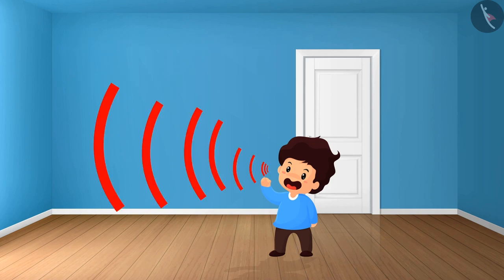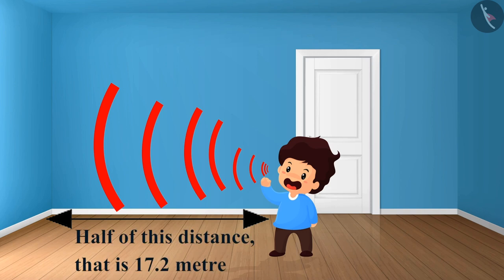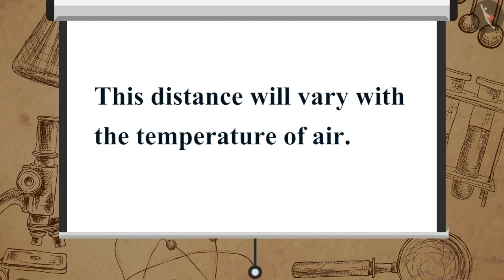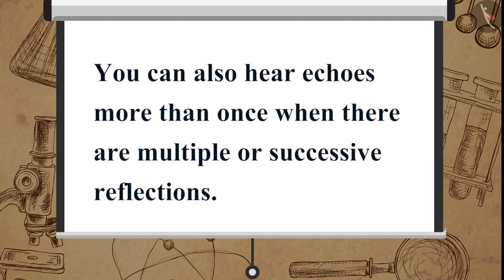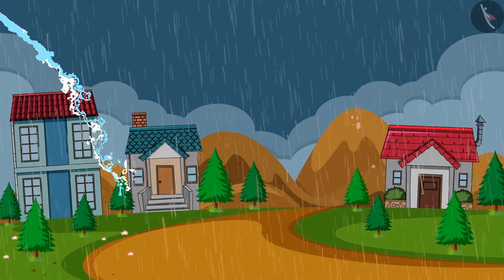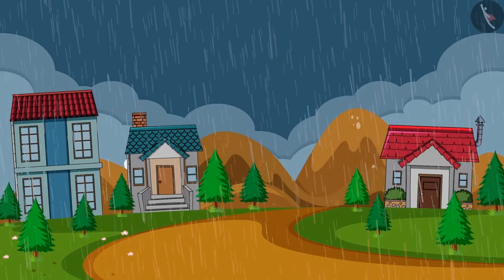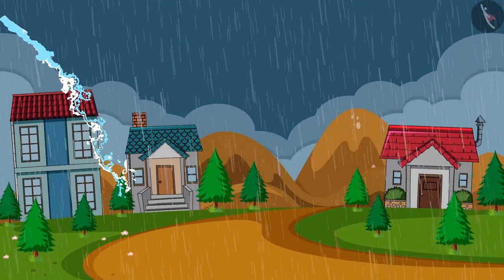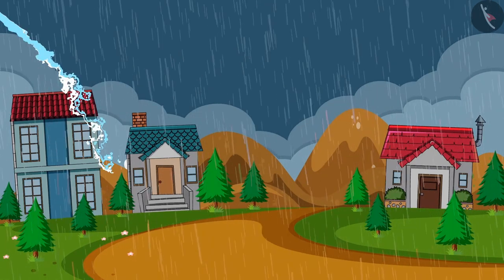So, to receive a distinct echo, the minimum distance between the source of sound and the reflecting surface should be at least half of this distance, that is 17.2 meters. This distance will vary with the temperature of air. You can also hear echoes more than once when there are multiple or successive reflections. Due to this reason, rolling of thunder sound also occurs. The thundering sound undergoes successive reflections from multiple reflecting surfaces like the clouds and the land.